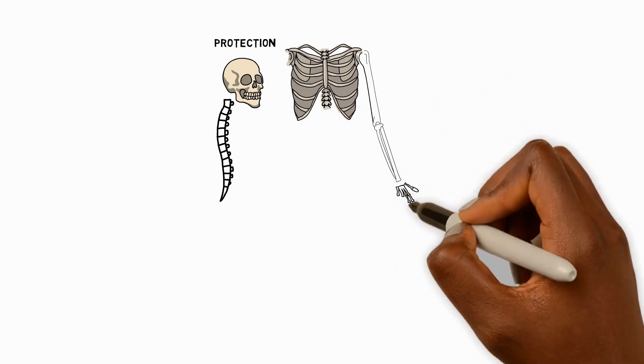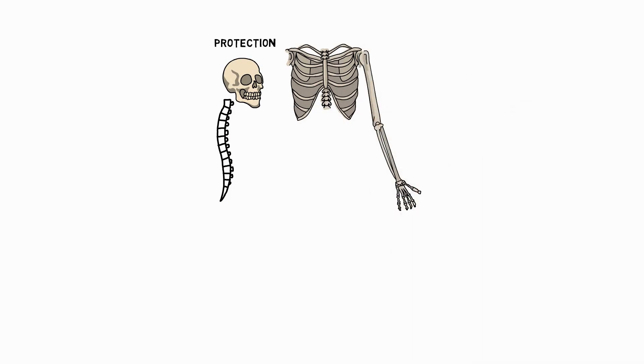The chest, made up of ribs and breastbone, protects the lungs and heart. The arms, with the humerus, radius, and ulna, and the hands, with the carpals, metacarpals, and phalanges, allow us to reach and hold on to things.